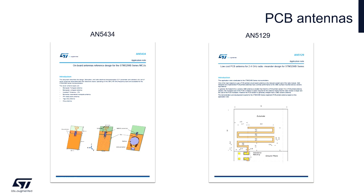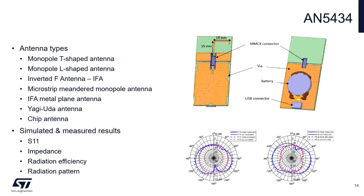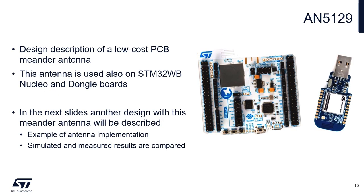ST supports the STM32WB antenna topic with two application notes: AN5434 and AN5129. The AN5434 describes several antenna types - monopole, T-shaped antenna, inverted F antenna, chip antenna, etc. These antennas were simulated and measured. You can easily compare parameters of these antennas. The next application note AN5129 describes a low-cost PCB meander antenna which is used for example on STM32WB nucleo or dongle boards.